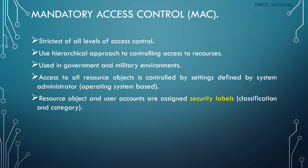When a user tries to access some information, the operating system checks the security label of the resource object — for example, a file — and the security label of the user, then compares them. If the comparison is positive, access to that file is granted to the user. If the comparison is negative, access is denied. This is how the mandatory access control mechanism works.